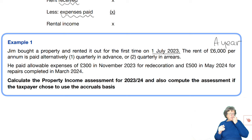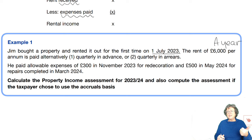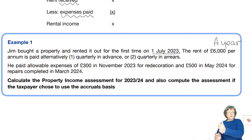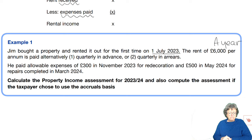We're going to have to do two calculations: one, whether it's quarterly in advance — so you pay at the beginning of the quarter — or quarterly in arrears, you pay at the end of the quarter. That will make a difference. He paid allowable expenses of £300 in November for redecoration.